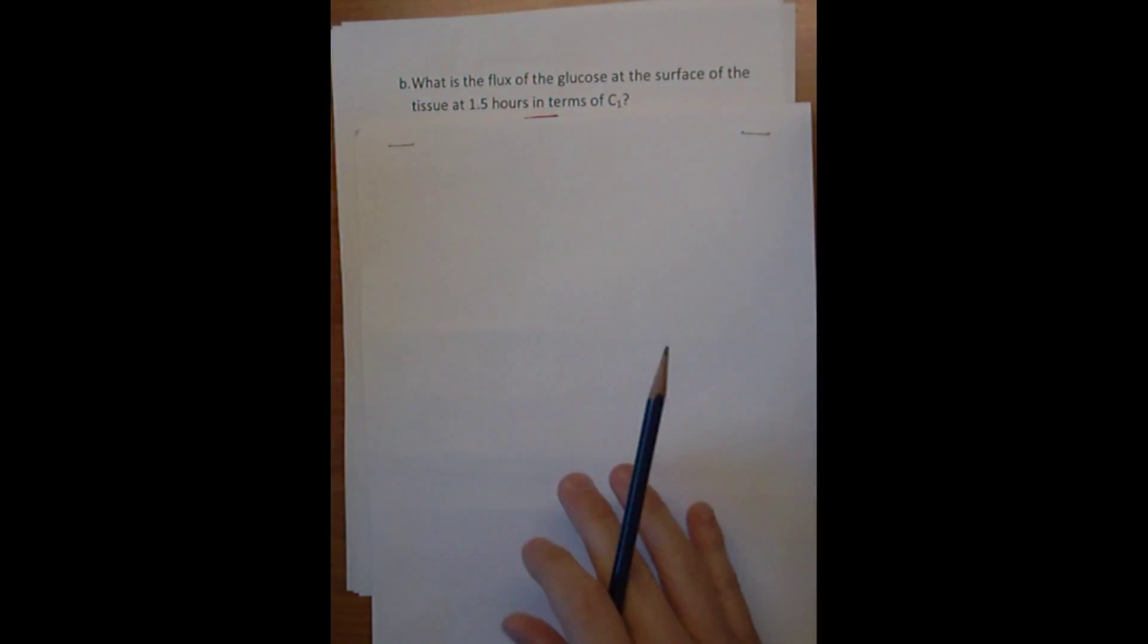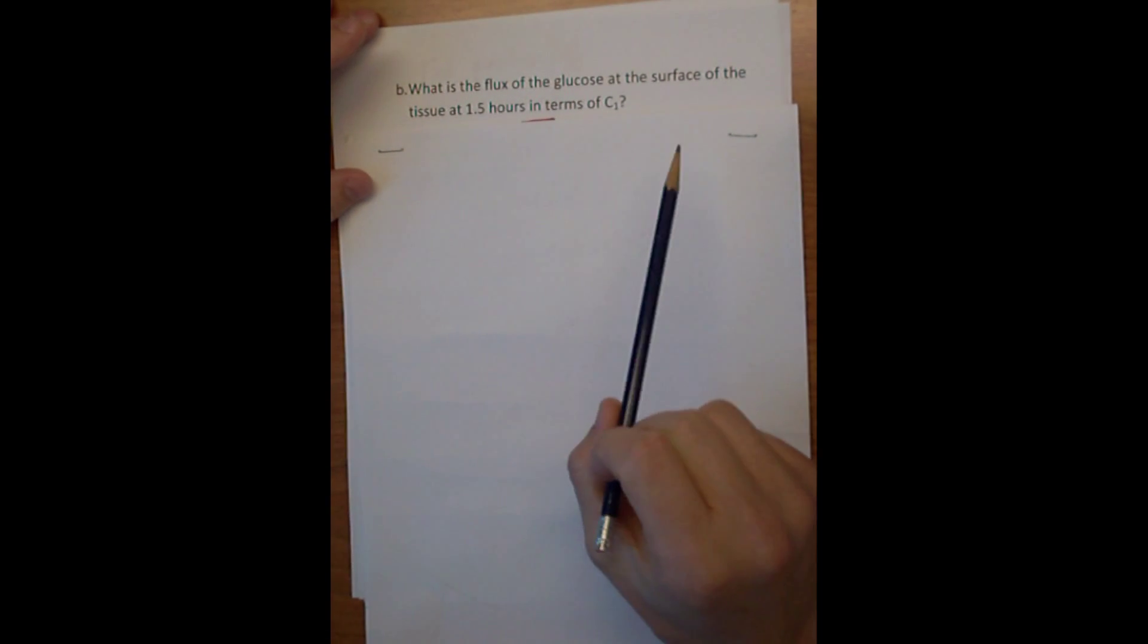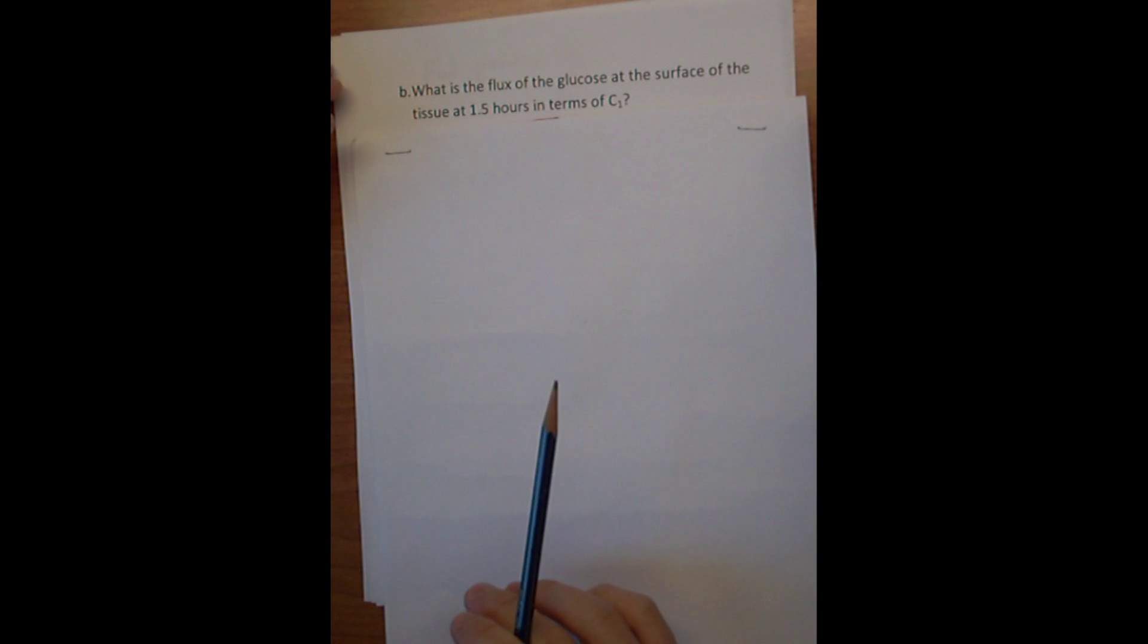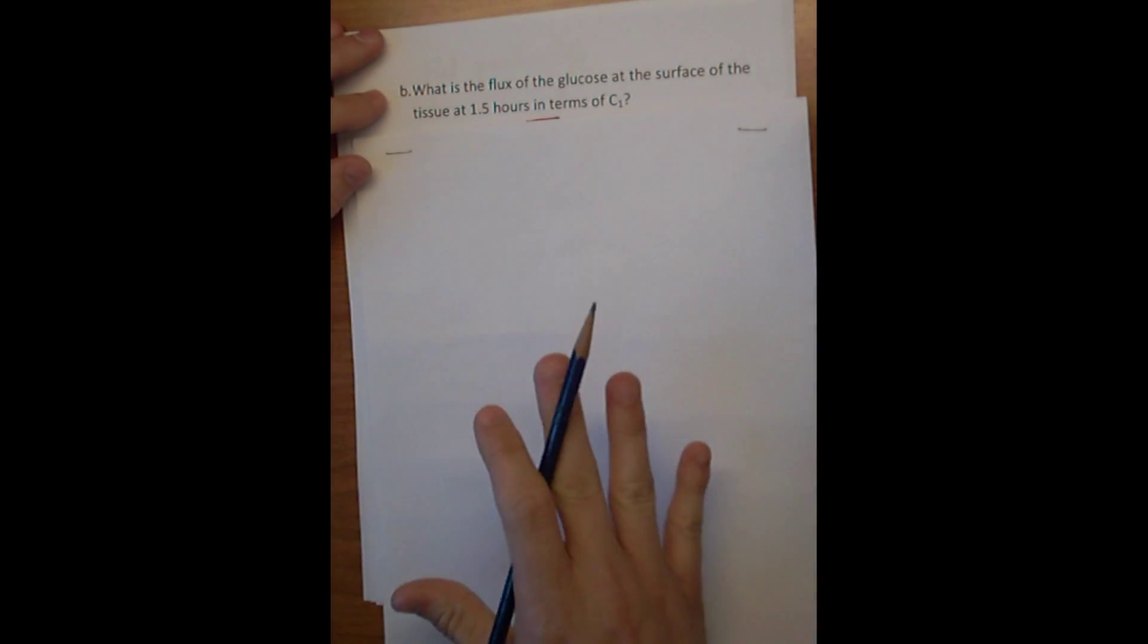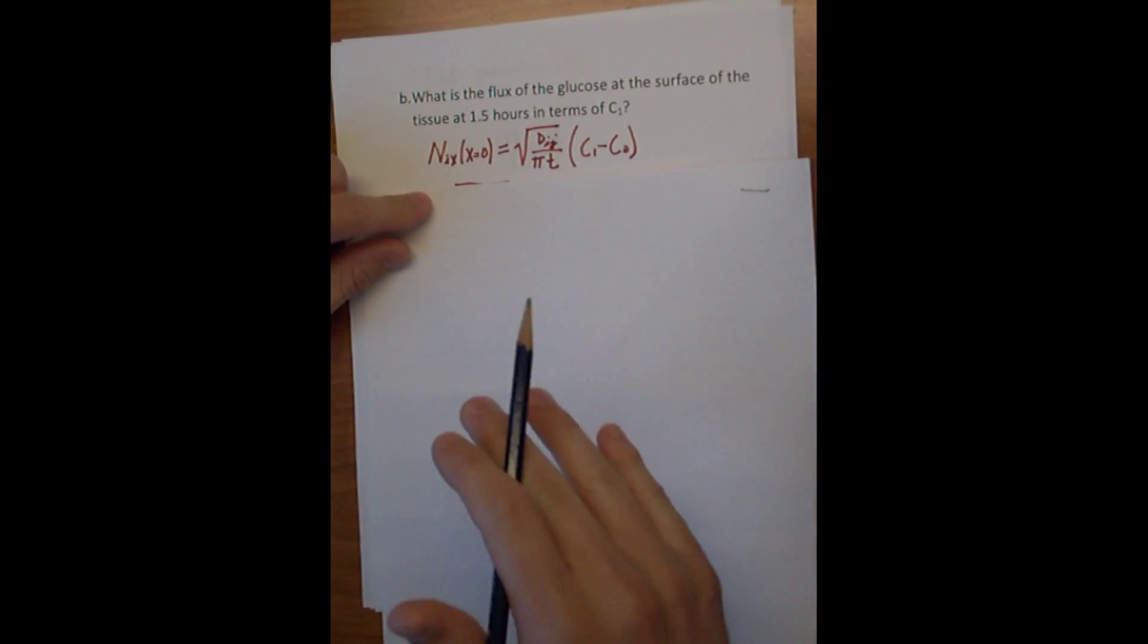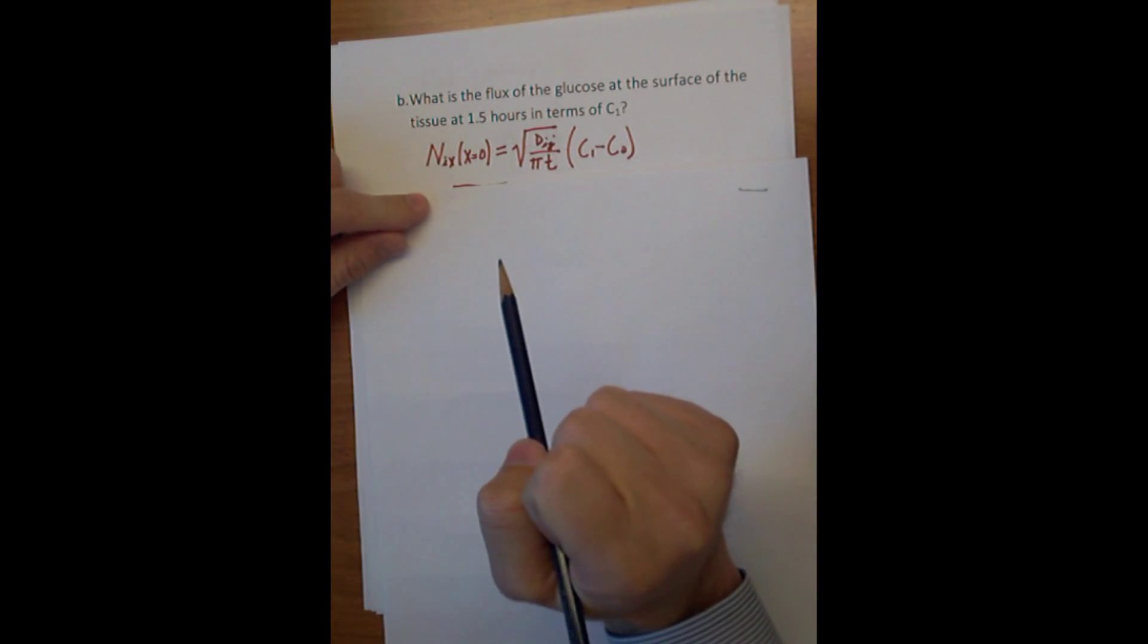Part B asks: what is the flux of the glucose at the surface of the tissue at one and a half hours in terms of C1? This is at the same time, so we know the semi-infinite approximation still holds. And what's really nice about the semi-infinite approximation is it has a really simple flux equation for the surface. Here's the flux equation.